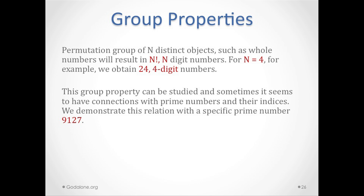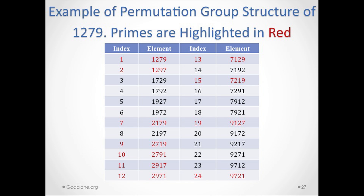This group property can be studied and sometimes seems to have connections with prime numbers and their indices. We demonstrate this relation with the specific number 9127. For example, with digits 1, 2, 7, 9, you write all permutations — 1279, 1297, and so on — and check which positions are prime: positions 10, 11, 12, 13, 15, 19, and 24 are all prime numbers, highlighted here.